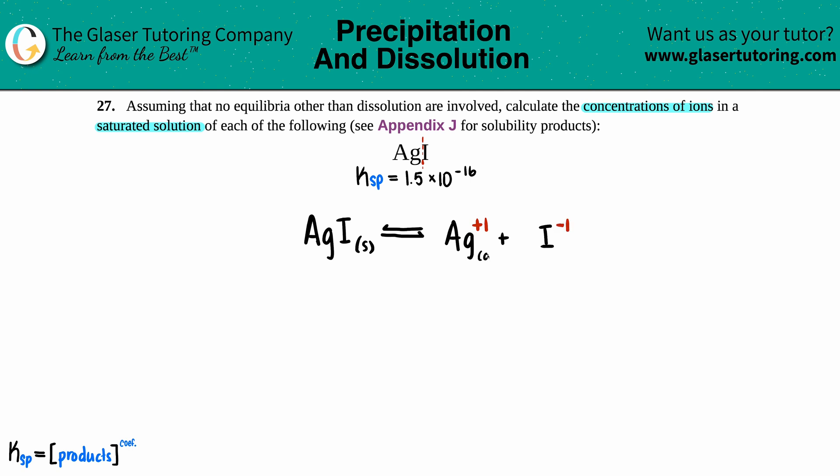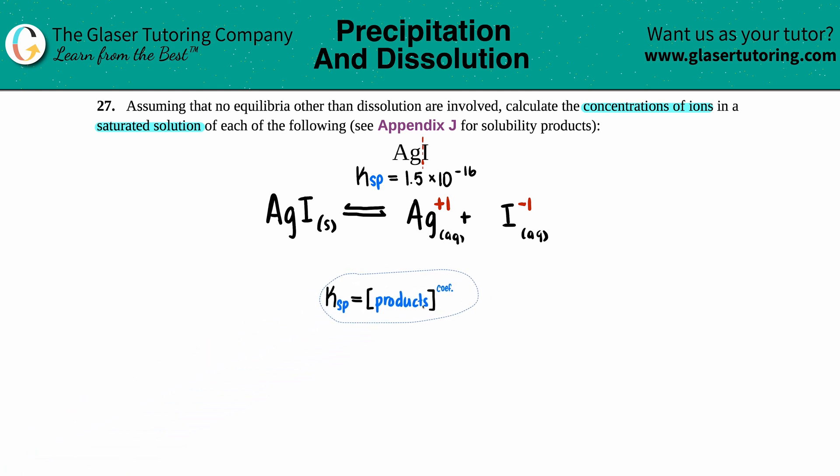We have charges, so they're definitely going to be aqueous, and this equation is already balanced. Now with the balanced equation comes the general Ksp equation. I'm going to use the general formula: Ksp equals the concentration of the products raised to their coefficients. Here we have Ksp equal to the two products (the aqueous ones), so [Ag⁺] times [I⁻]. Since both don't have any coefficients in front of them, we can raise these to the first, but it doesn't really make a difference. The Ksp is 1.5 × 10⁻¹⁶.